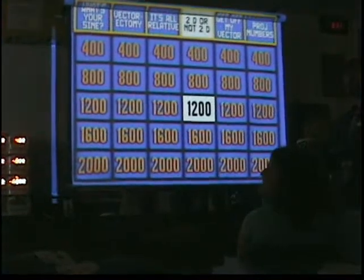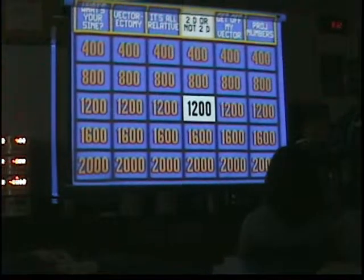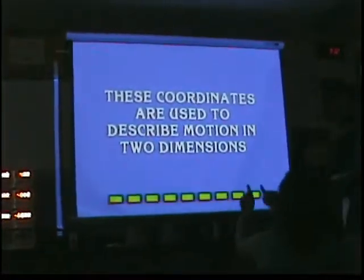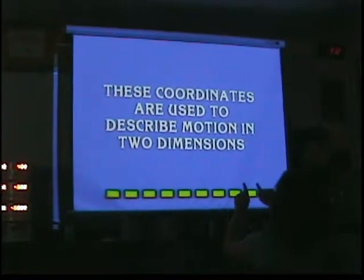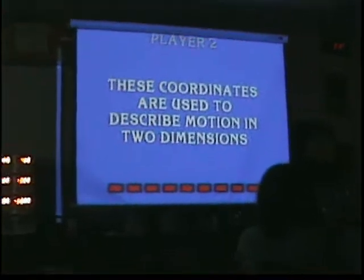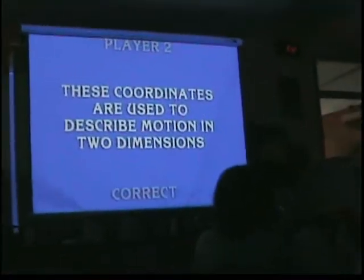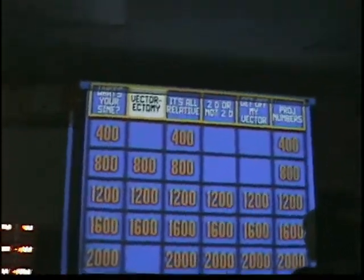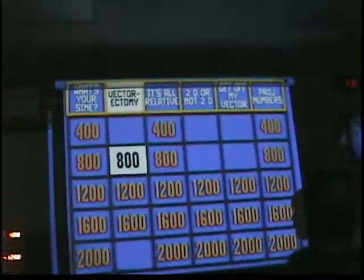You guys pick — 2D or Not 2D for 2,000. No! Two-dimensional motion for 400. Player 2. X and Y. X and Y is correct! 10,000. Let's go right there for 1,600.